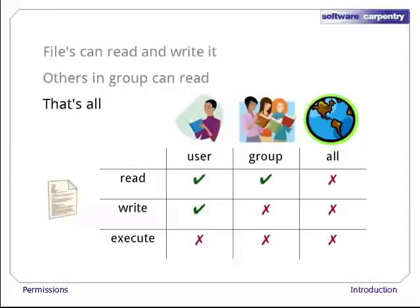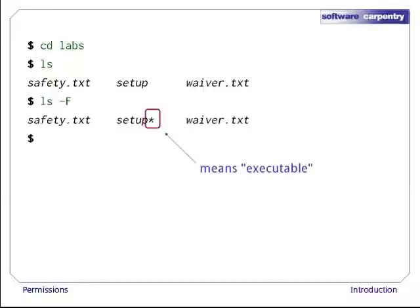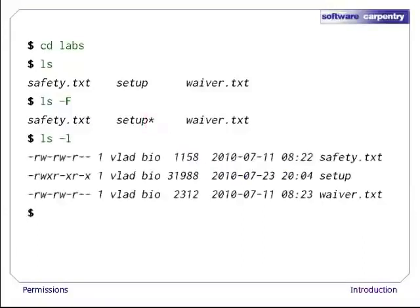Let's have a look at this model in action. If we cd into the Labs directory, ls shows us that it contains three things: safety.txt, setup, and waiver.txt. If we run ls -F, it puts a star at the end of setup's name. This is its way of telling us that setup is executable, i.e., that it's a program of some kind that we can run. Now let's run the command ls -l. The -l flag tells ls to give us a long-form listing.